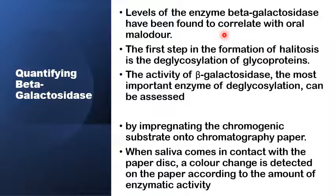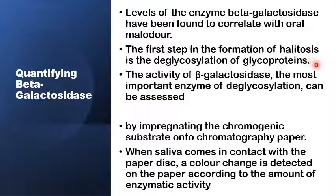This test is designed to identify the enzyme beta-glycosidase, which is an important enzyme in the production of bad breath and halitosis. The first step in the formation of halitosis is the deglycosylation of glycoproteins before the amino acids are putrefied and produce the volatile sulfur compounds. The activity of beta-glycosidase can be detected and quantified using paper strips with a color substrate — when it comes in contact with saliva, there is a color change which can be detected and quantified.